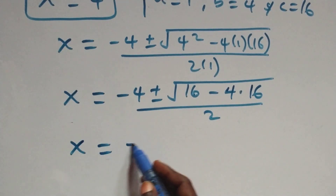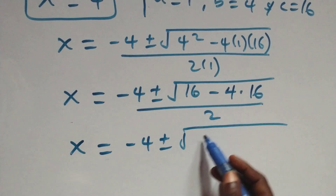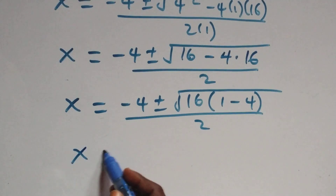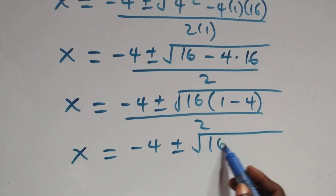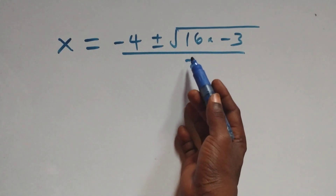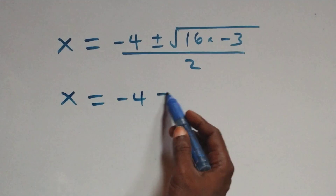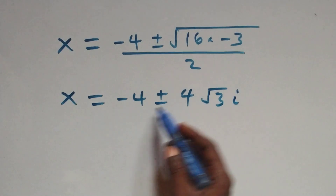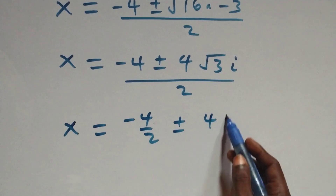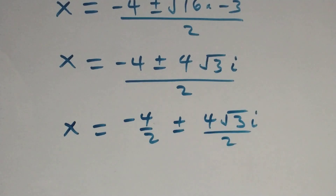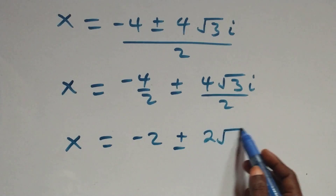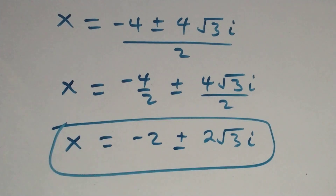This becomes x equals minus 4 plus or minus square root of 16 minus 64 over 2. Factoring 16 from inside the root gives x equals minus 4 plus or minus square root of 16 times negative 3, over 2. Separating root 16 as 4, we get x equals minus 4 plus or minus 4 root 3i over 2, which simplifies to x equals minus 4 over 2 plus or minus 2 root 3i, giving two more complex solutions.